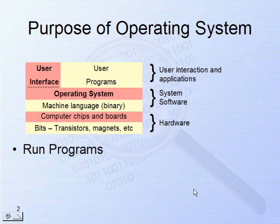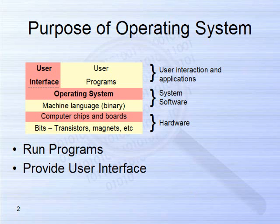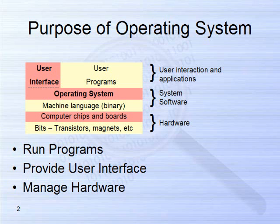The main function of the operating system is three-fold: it runs programs like Microsoft Word, games, and instant messaging applications; it provides a user interface for you to do things with files and control aspects of your computer; and it manages the hardware, allowing you to set the screen resolution and install new devices. The operating system is really a program running on the hardware like any other program, but its job is to run programs, provide the interface, and manage the hardware.